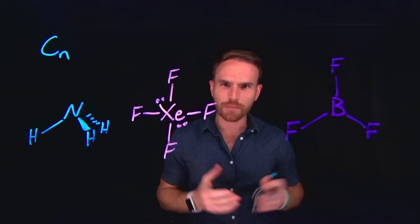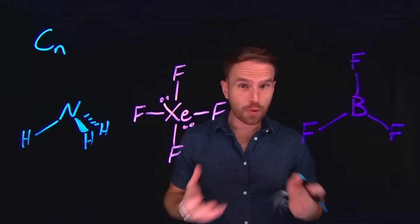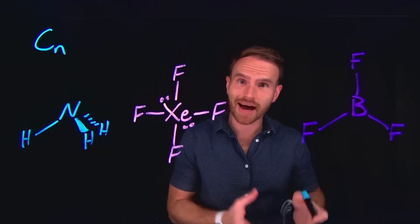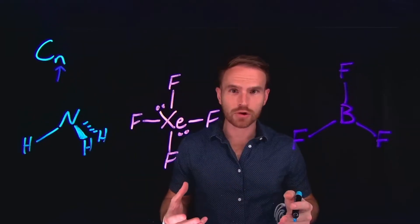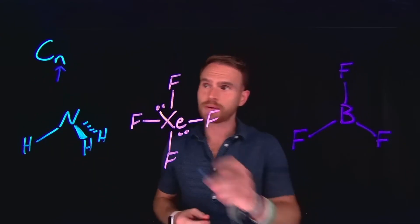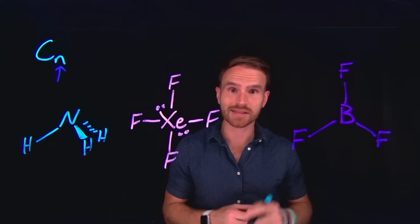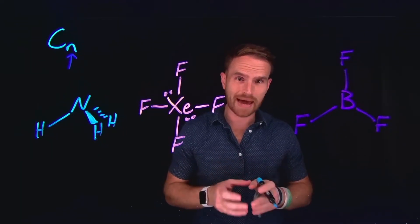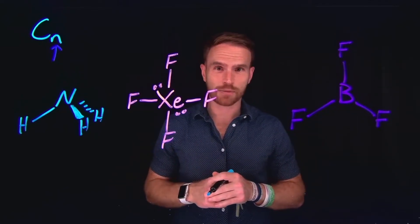Identifying what is called the principal rotation axis is going to be integral to your success in assigning point groups. The principal rotation axis is the axis of rotation that has the highest order — in other words, where this N value is the greatest number. Occasionally in molecules you'll see multiple rotation axes, so being able to identify the principal rotation axis, or the highest order rotation axis, is really important. In many cases the axis runs through the center of mass of the molecule, but identifying it can sometimes be a little tricky.